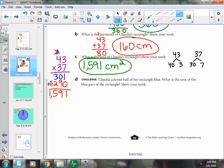So I'm going to do 40 times 30 and 40 times 7. And then I'm going to do 3 times 30 and 3 times 7. And I'm going to add them all together.